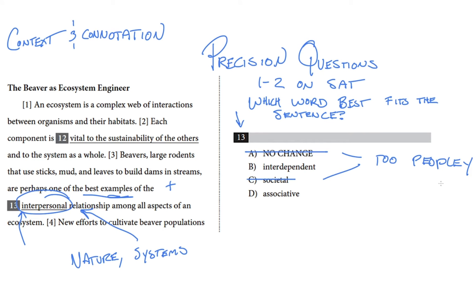And that leaves us with interdependent and associative. While I couldn't tell you with great certainty about every possible meaning of the word associative, I do feel quite confident that interdependent has the connotation that we're looking for. And that means that interdependent is our choice. It matches the context of the paragraph. It has a connotation of systems without the added connotation of human cities or relationships. And unlike associative, it doesn't have a primary connotation with math.